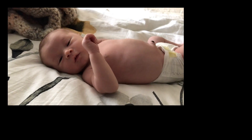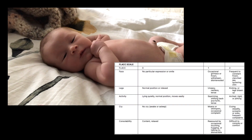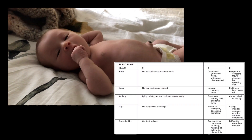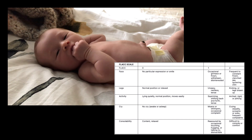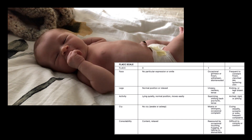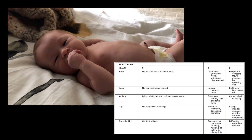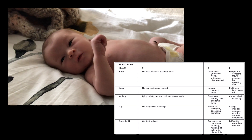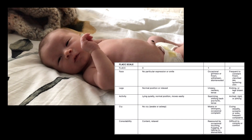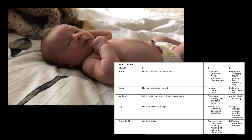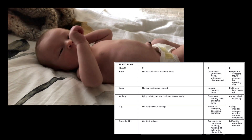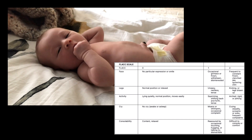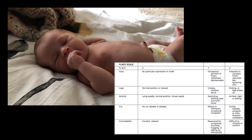Using this patient as an example, we can see that there is no particular expression on her face, her legs are in a normal and relaxed position, she's lying quietly, not crying, and appears to be content and relaxed. Therefore, the FLACC scale is 0.